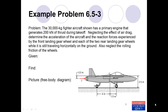This example is from the text Conceptual Dynamics, specifically example problem 6.5-3. The problem statement reads: the 30,000 kg fighter aircraft shown has a primary engine that generates 200 kN of thrust during takeoff. Neglecting the effect of air drag, determine the acceleration of the aircraft and the reaction forces experienced by the front landing gear wheel and each of the two rear landing gear wheels while it is still traveling horizontally on the ground. Also neglect the rolling friction of the wheels.